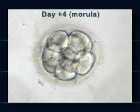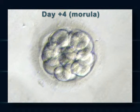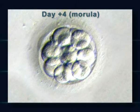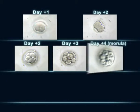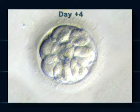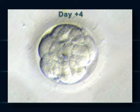On day four, the embryo divides a number of times, becoming a morula. This is when it begins to become compact.